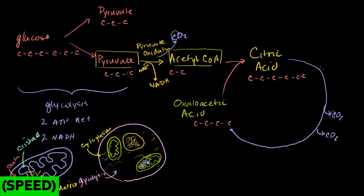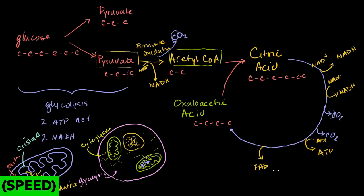The cycle doesn't just generate carbons — the whole idea is to generate NADHs, FADH2s, and ATPs. So we reduce NAD+ into NADH multiple times, produce some ATP from ADP, and some FAD gets reduced into FADH2. The reason we pay attention to NADHs and FADH2s is that they are the inputs into the electron transport chain — that's where the bulk of ATP is actually produced. Then we end up back at oxaloacetic acid and can perform the whole citric acid cycle over again.